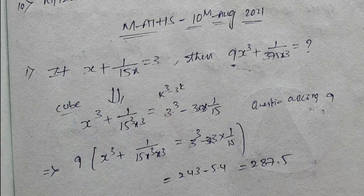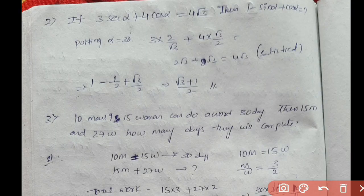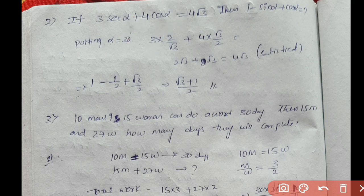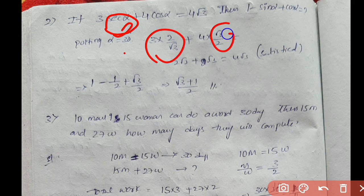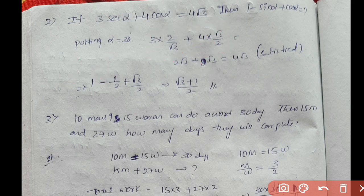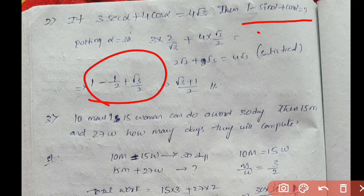Next question: find the value of 1 - sin α + cos α. We will use the substitution method, checking α = 30°. We get 2/√3 + 4cos α, giving us 2√3 + 2√3 = 4√3, which satisfies α = 30°. So the answer involves 100α + 30 degrees.